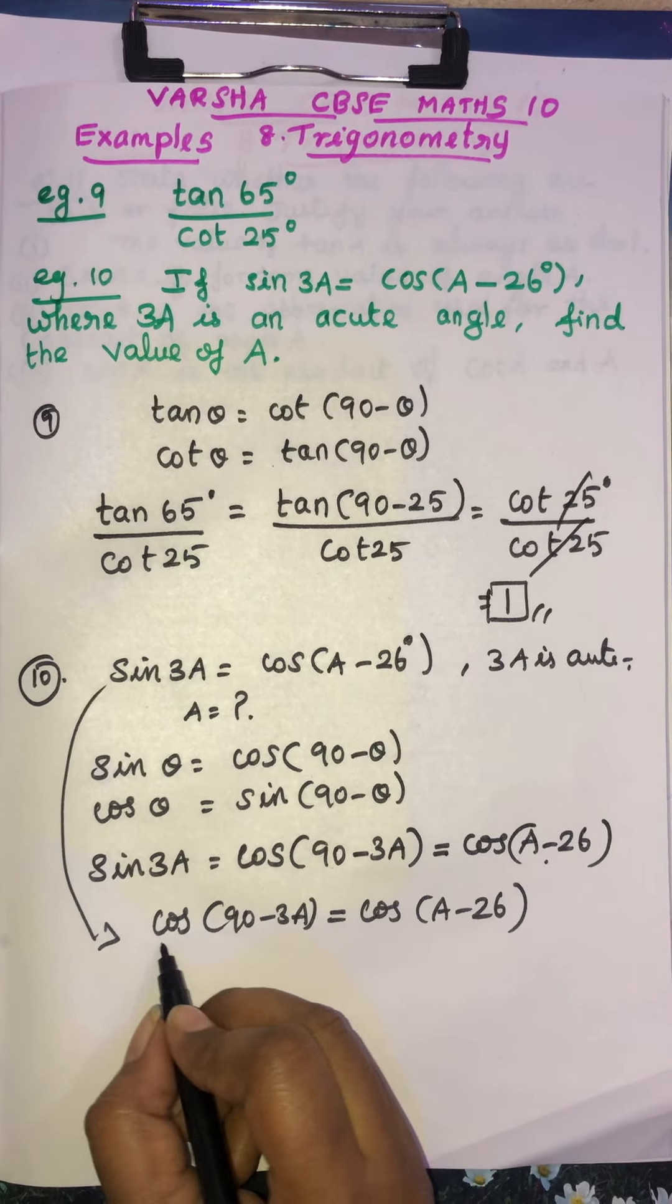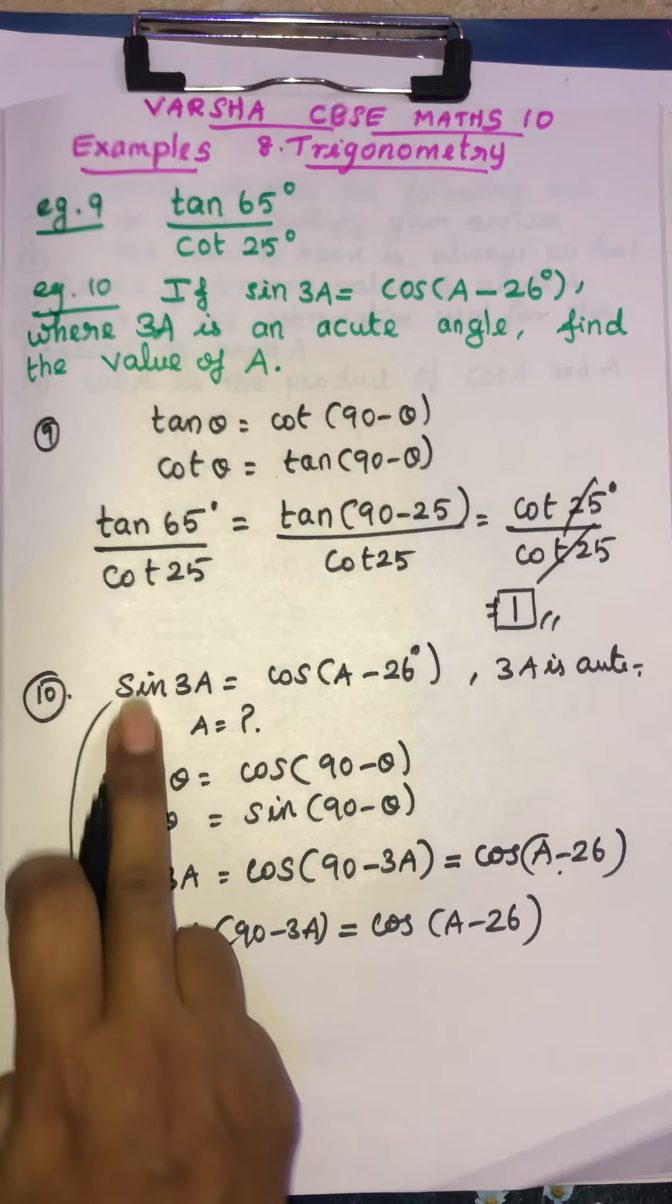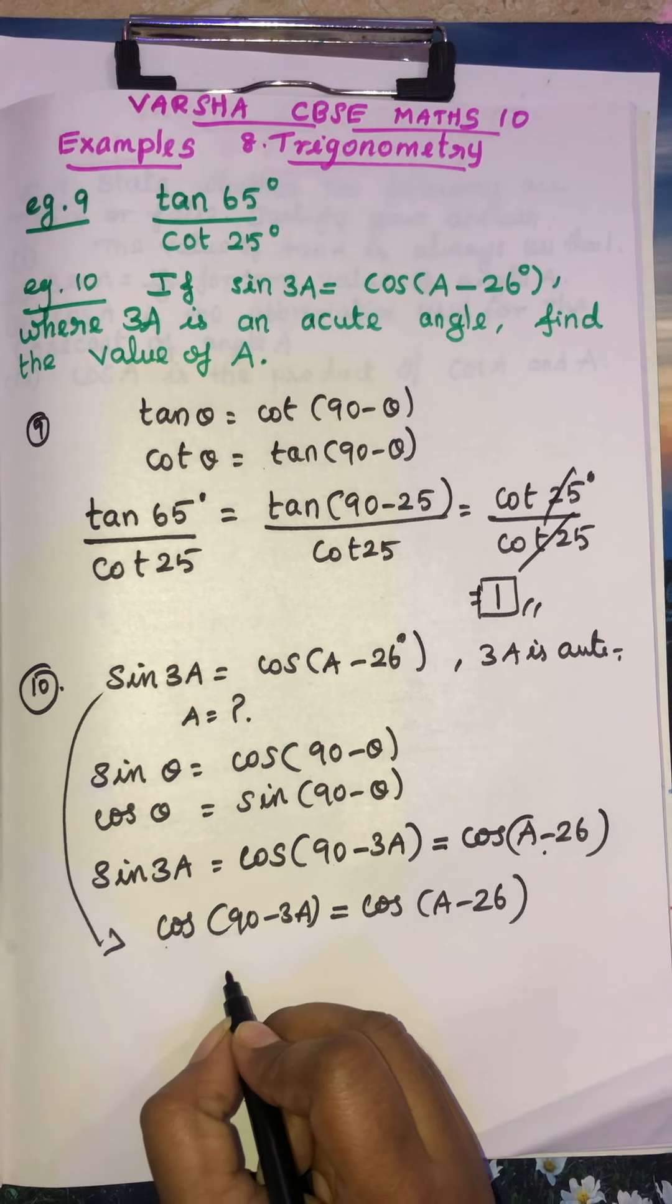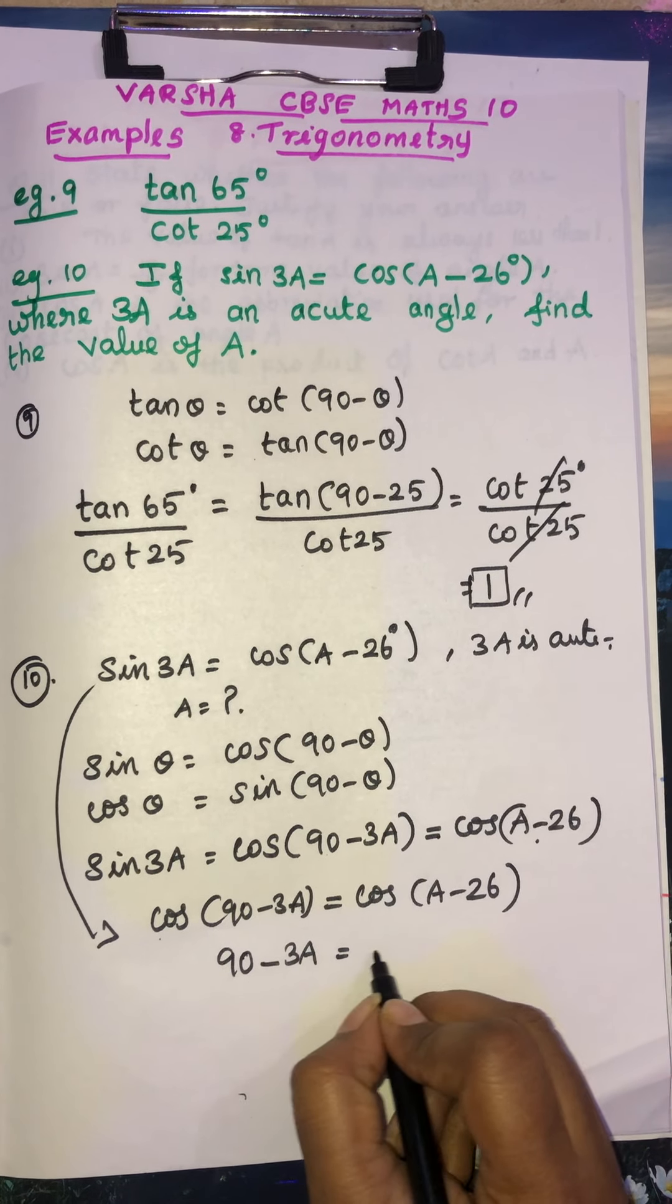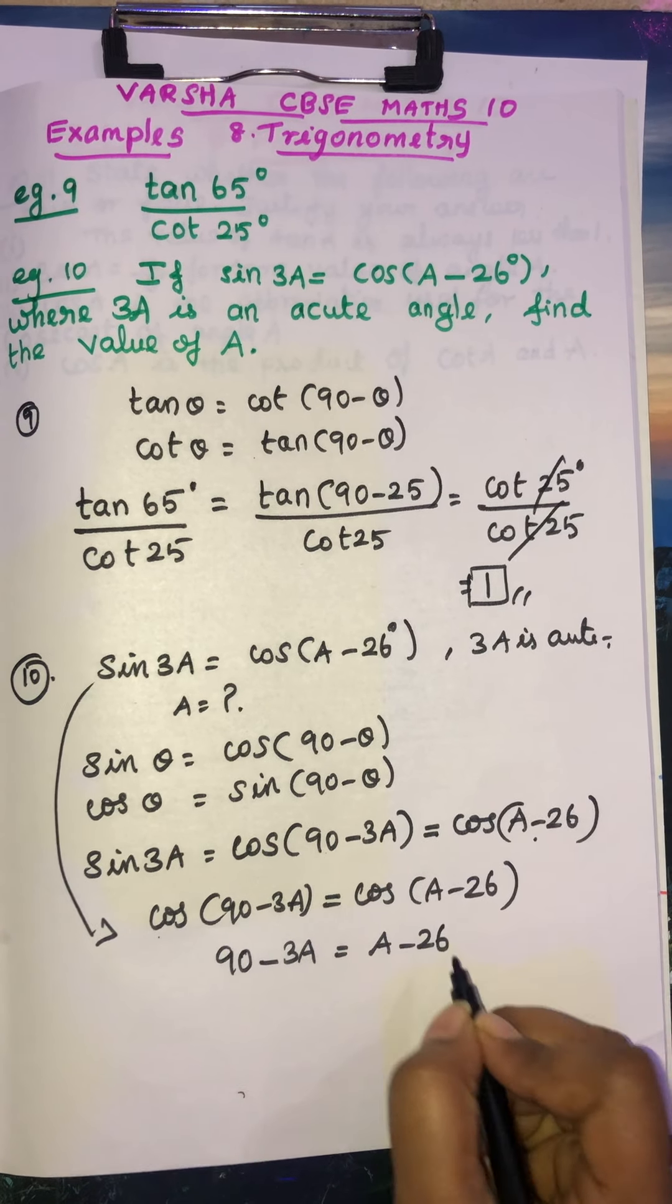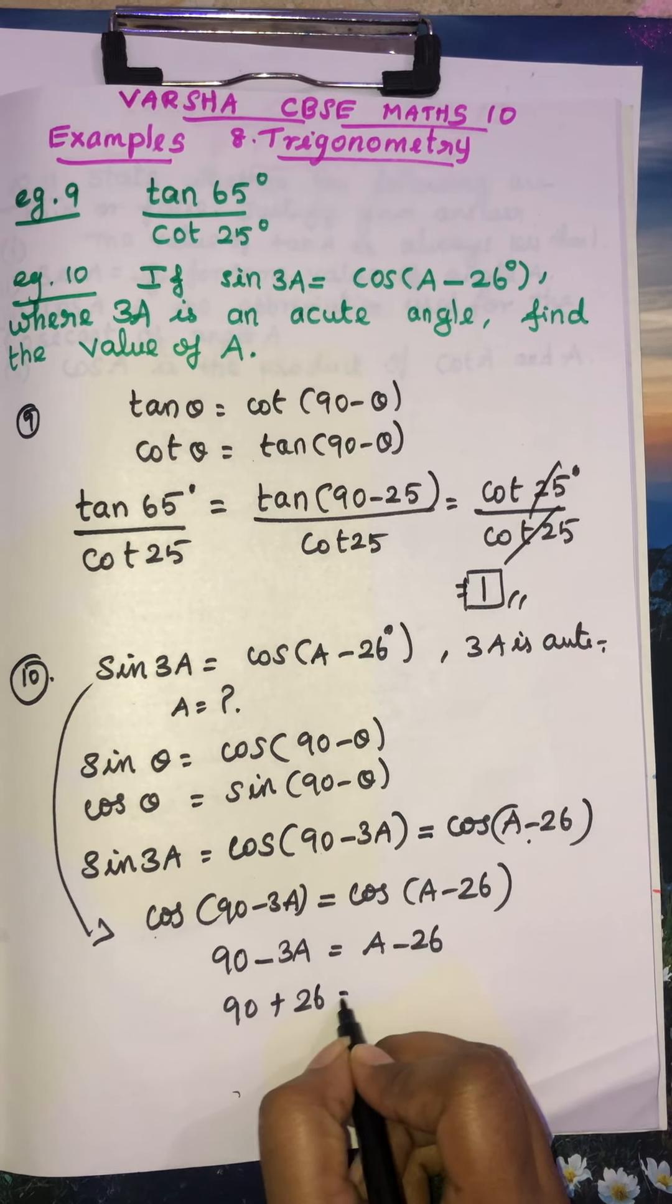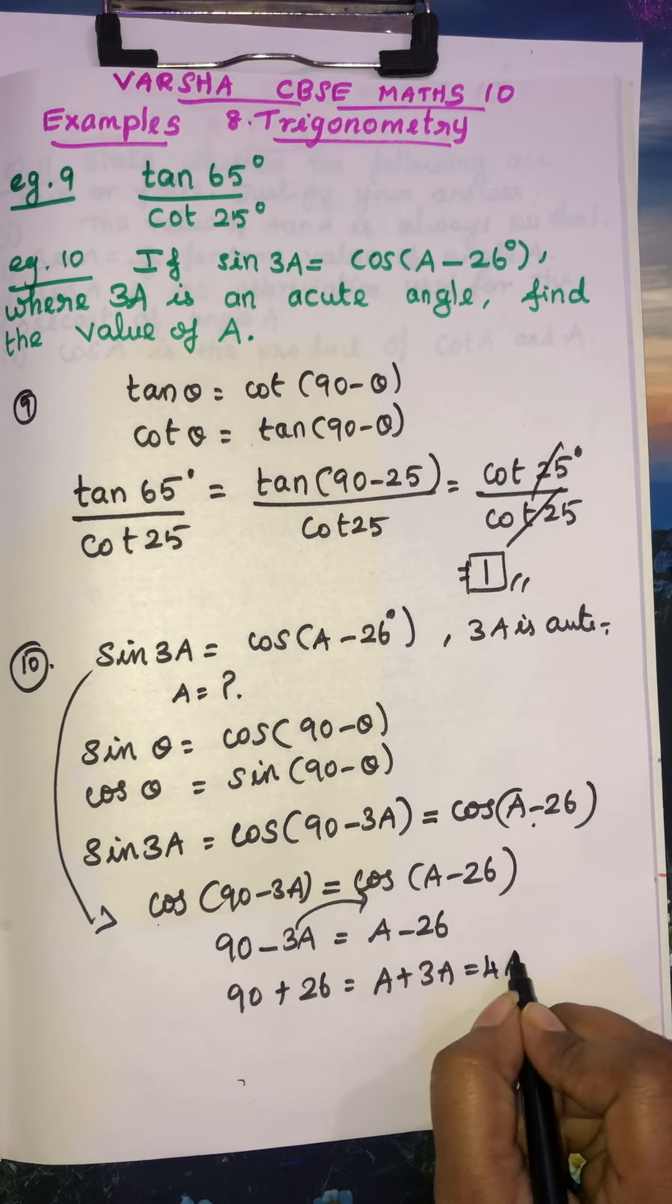So both equal to sin minus that sin is converted into cos. So cos cos equals, angles are equal. So 90 minus 3a is equal to a minus 26. 26 comes as plus 3a goes there. So a plus 3a, this is 4a.